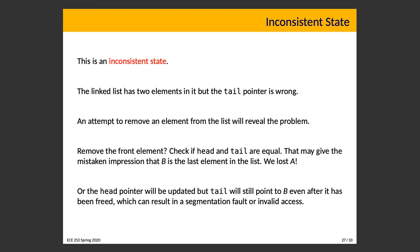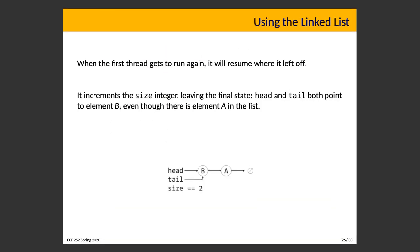Alternatively, if size is checked and seen as 2, the head pointer is updated to A, but tail still points to B even after B has been deallocated — which could result in a segmentation fault or overriding of other memory. The problem may manifest differently depending on the implementation of any function working with this now-inconsistent linked list. The behavior is not always the same, so we need to avoid and fix this.